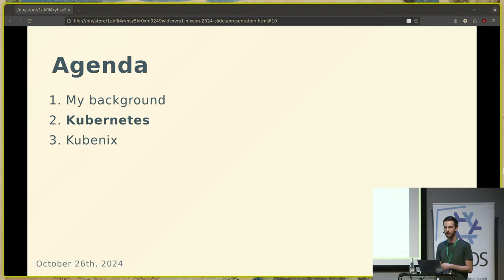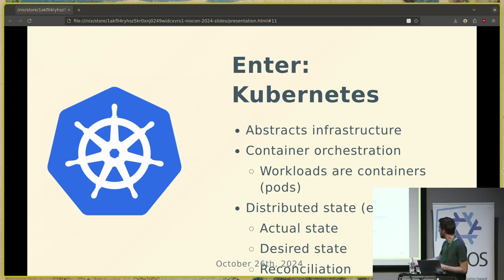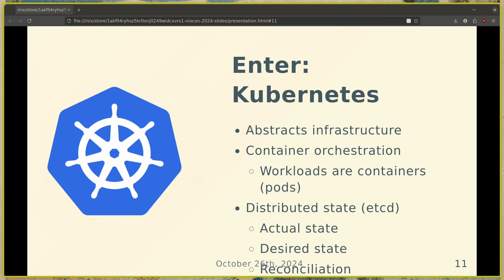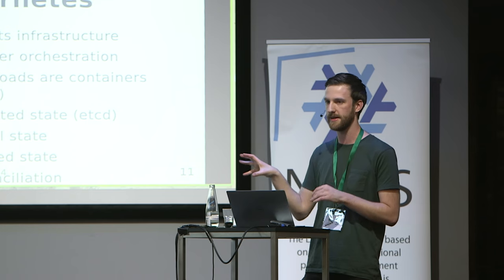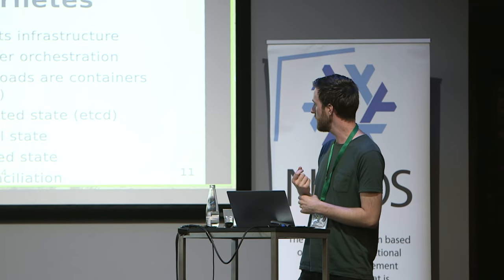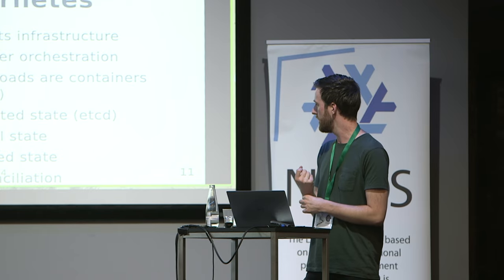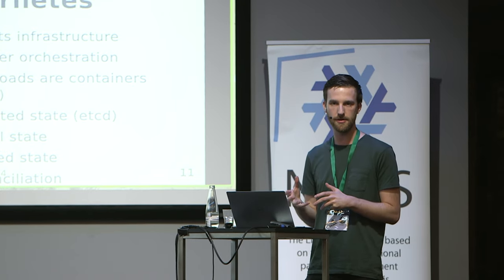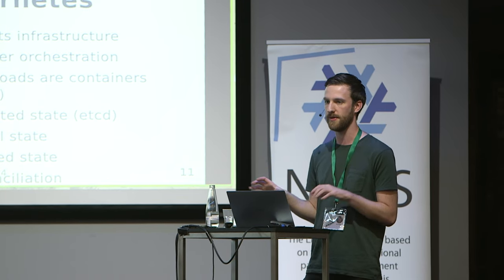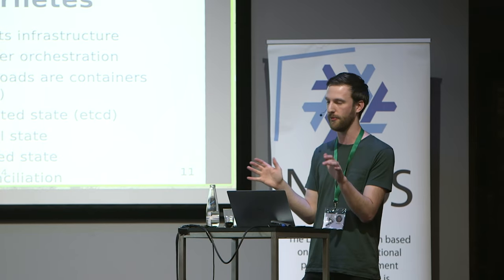One of the technologies that can help with this is Kubernetes. The idea with Kubernetes is that you can abstract your infrastructure — this works with container orchestration. Every workload, every service like Jellyfin, will be a container, or as it's called in Kubernetes land, a pod. It will be orchestrated by Kubernetes, which will do its best to place it on a host, but it's not tied down to just one host. Under the hood, it uses a distributed state maintained by etcd. The idea is that you have some actual state of your cluster and a desired state, and Kubernetes will do its best to make the actual state converge to your desired state.